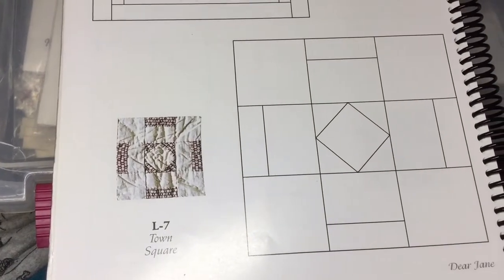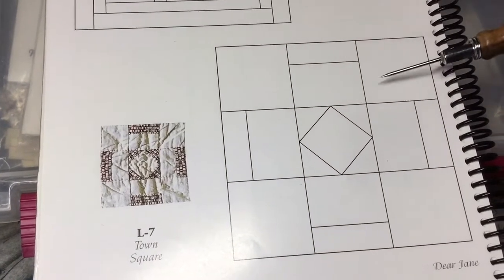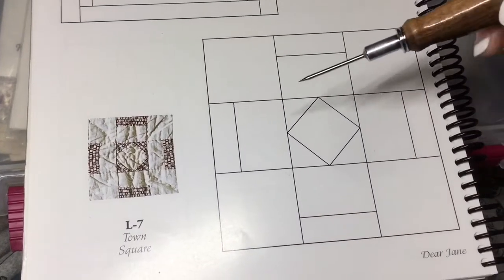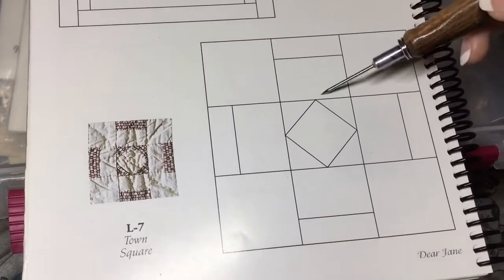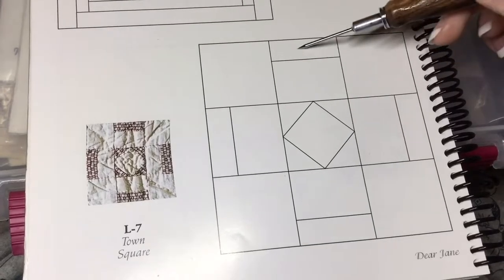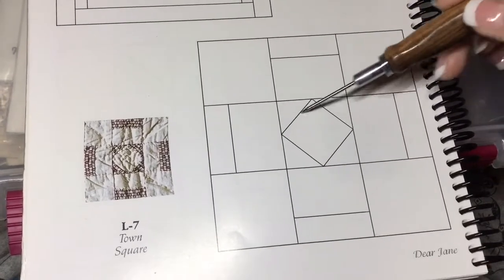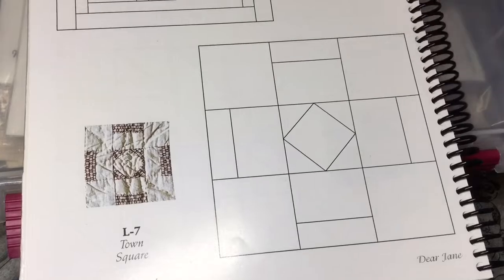Our next block is L7. L7 is put together in three separate rows, like a nine-patch construction. The center blocks on the top and bottom row are designed with two rectangles, and then in the middle of the square is a square and a square assembly.